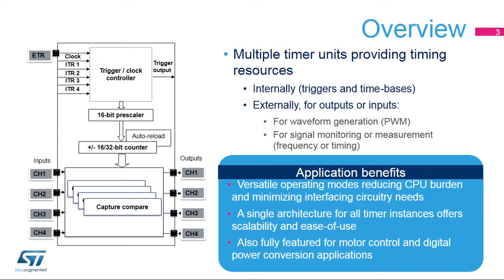Some of the STM32 timers feature up-down counting modes: the advanced control timers 1 and 8, and the general purpose timers 2, 3, 4, and 5. The counting direction can be programmed by software or automatically managed by the timer in center-aligned PWM mode. In this mode, the counting direction changes automatically on counter overflow and underflow. For a given PWM switching frequency, this mode reduces the acoustic noise by doubling the effective current ripple frequency, providing the optimum tradeoff between the power stage's switching losses and noise.